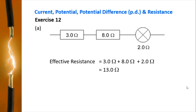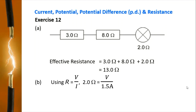In part B, to find the potential difference across the light bar, you need to use the relationship between resistance, potential difference, and current. Using R equals V over I, you substitute the value of 2.0 ohm and 1.5 ampere into the equation, and you calculate V by multiplying 1.5 ampere by 2.0 ohm to get an answer of 3.0 volts.